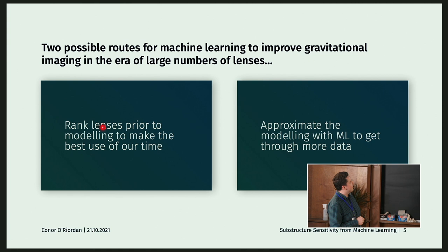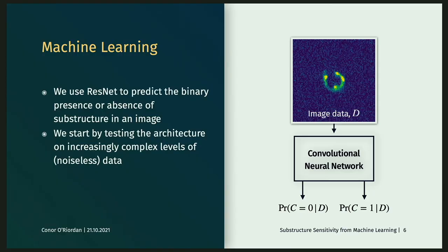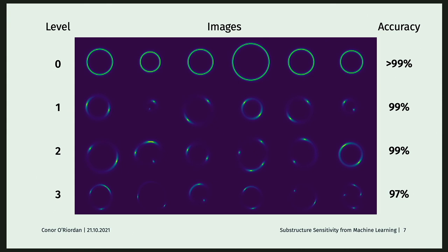I'm only going to talk about this second approach today, although we are working on both. And essentially, this is looking at can we replace or approximate the traditionally expensive method for modeling the substructure with something much quicker, machine learning based, so that we can just get through as much Euclid data as possible and put constraints on the dark matter model that way. So, the approach here is very simple. We basically use ResNet in a few different sizes to just classify for now just a binary case of whether there is a subhalo in an image or not. It's very simple. You basically just get class probabilities for both cases.